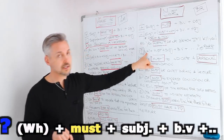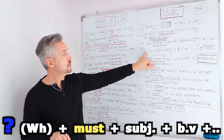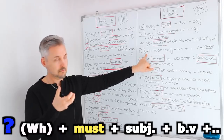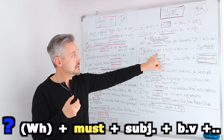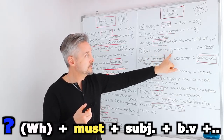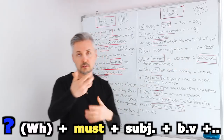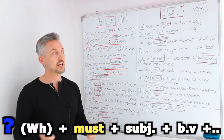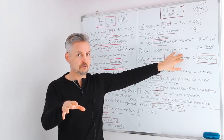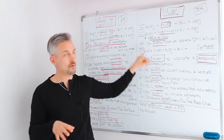For an interrogative sentence with 'must,' you use a wh- question word if you have one, then 'must,' then the subject, then the base of the verb, and then the time expression or object, if any. This is very, very rare — we usually don't use 'must' in a question.